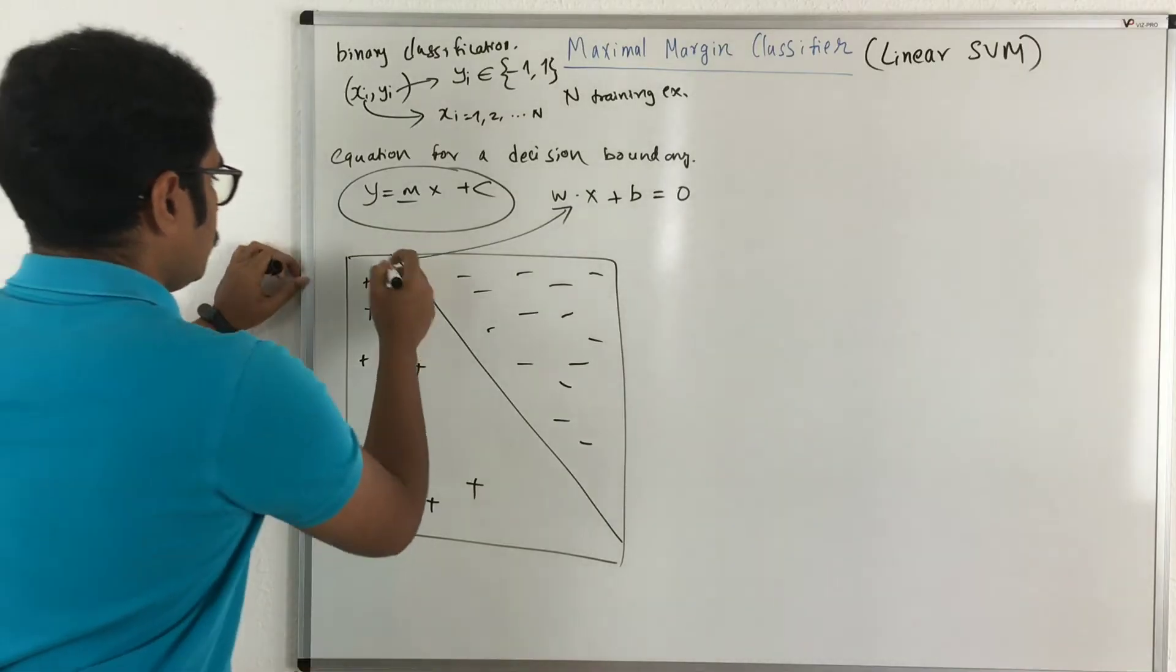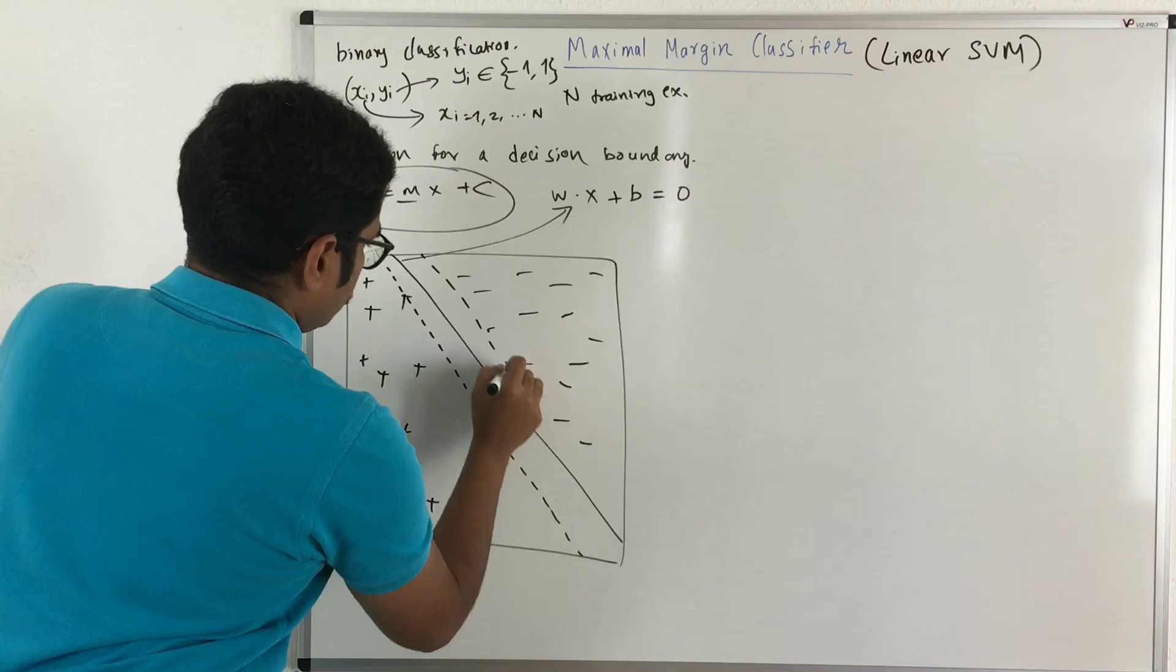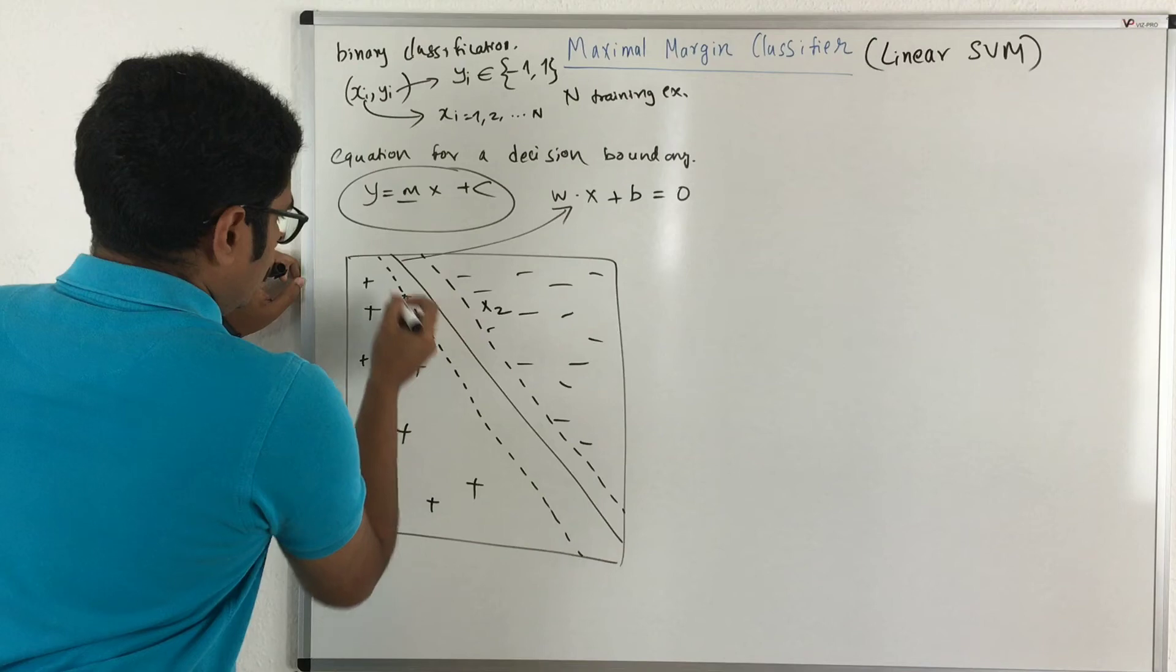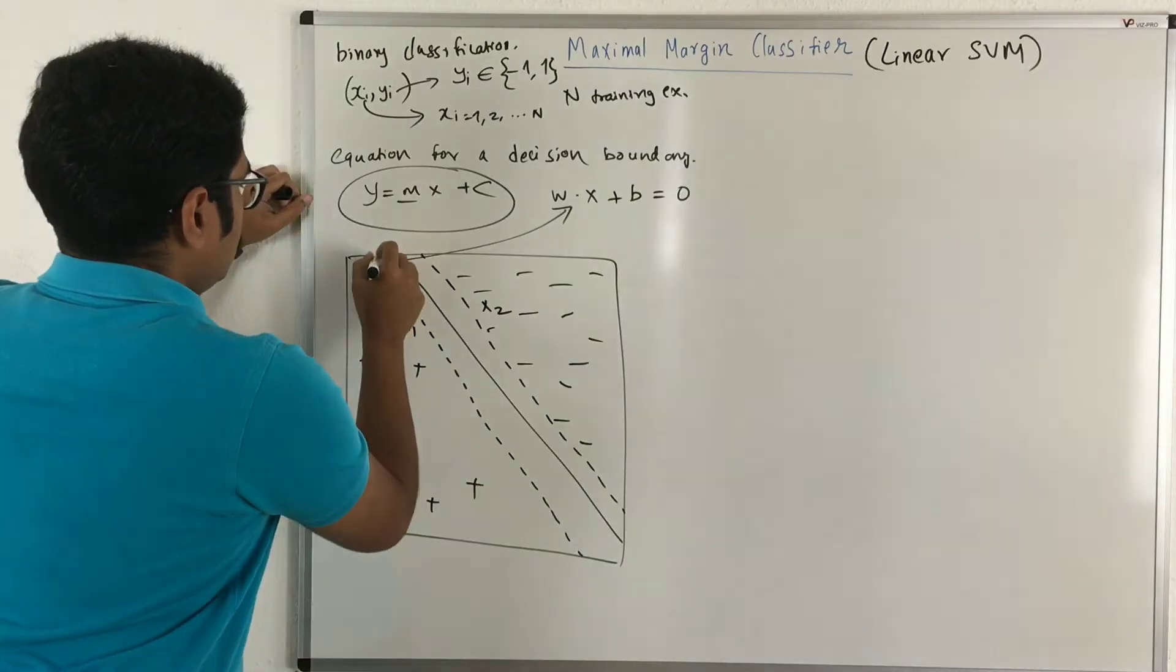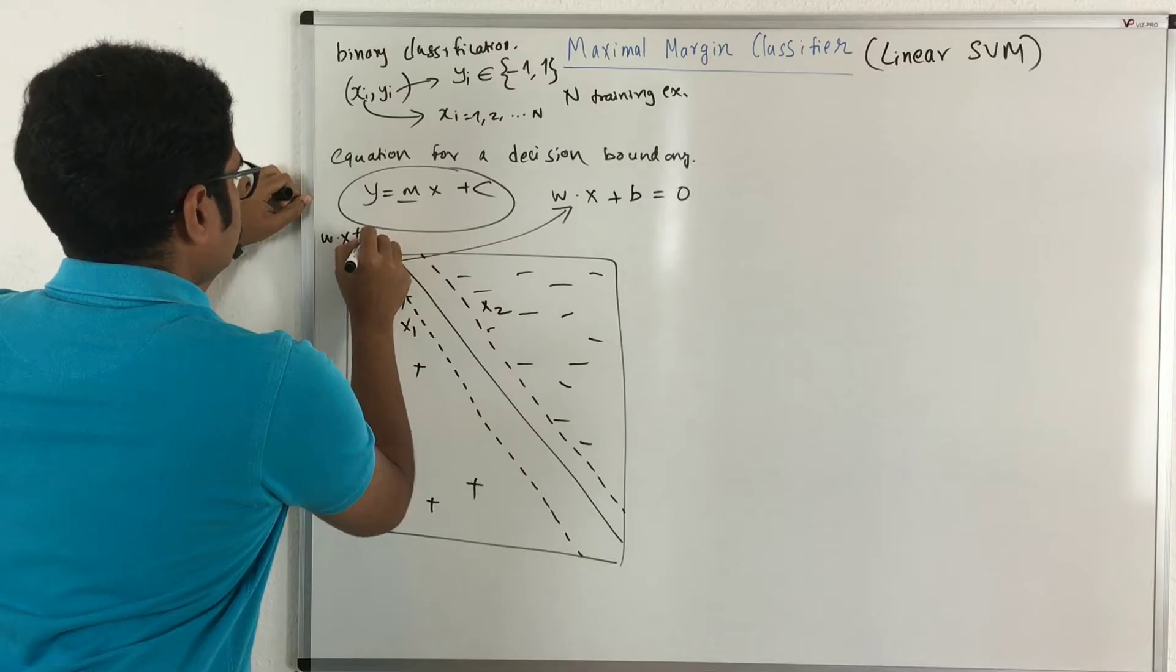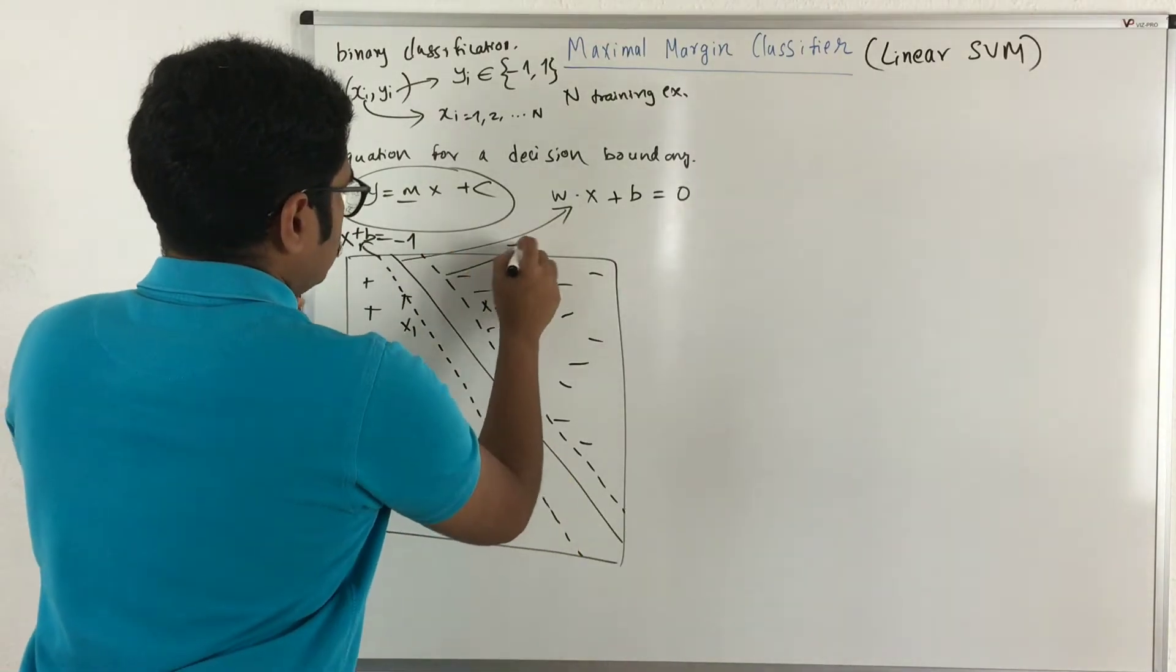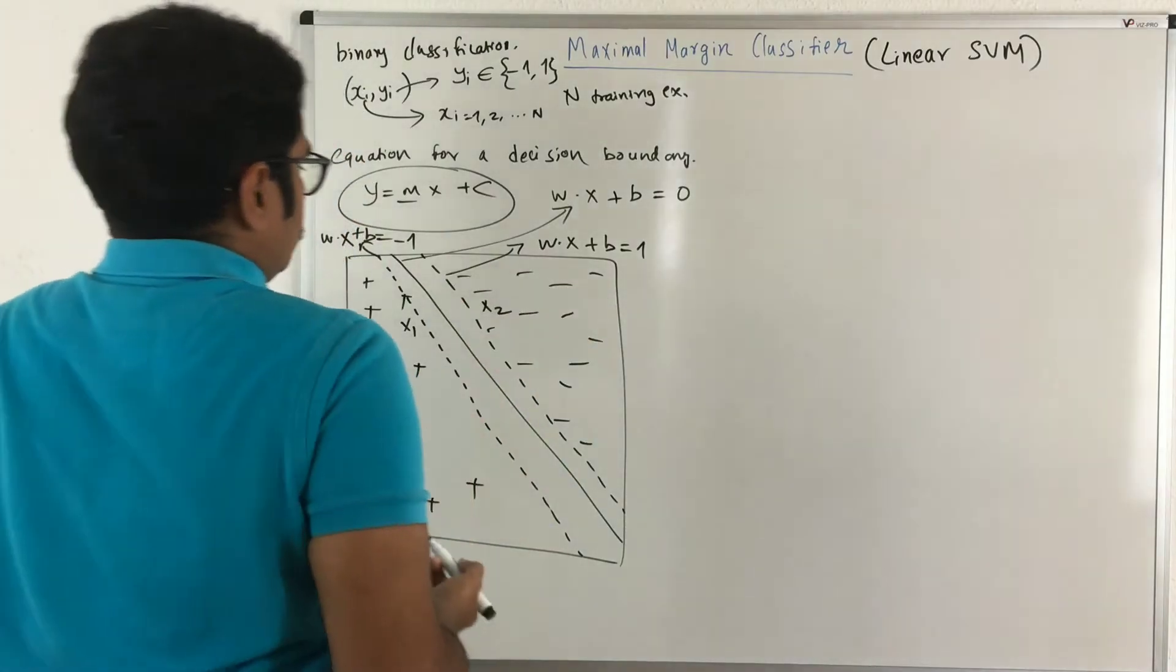Now say for example, you have some area swept here. So this I'm drawing with the help of this dotted line. Say you have these two portions, say this is X1 and this is X2. Now the equation for this line that is the line which is there below this solid line, for that we write the equation as WX plus B equals minus 1. So since it's lying below that line, that's why we have written it as minus 1, and for this what we write is WX plus B equals positive 1, simple as that.